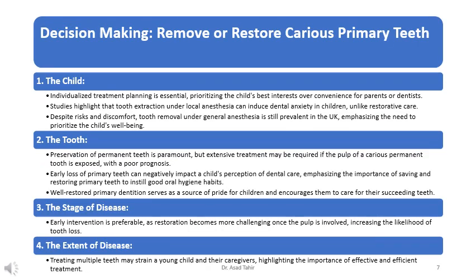When considering whether to remove or restore a carious primary tooth, several factors must be taken into account. The child: individualized treatment planning is essential, prioritizing the child's best interests over convenience for parents or dentists. Studies show that tooth extraction under local anesthesia can induce dental anxiety in children, unlike restorative care. Despite risks and discomfort, tooth removal under general anesthesia is still prevalent in the UK, emphasizing the need to prioritize the child's well-being.